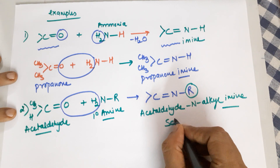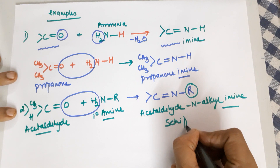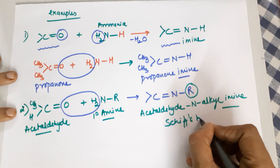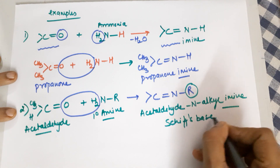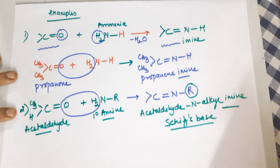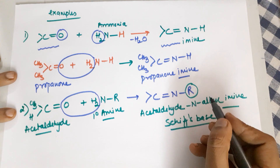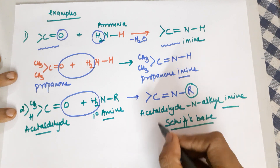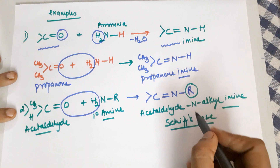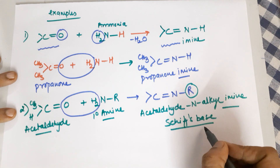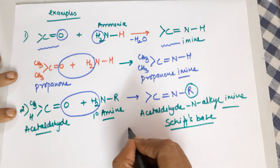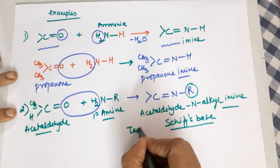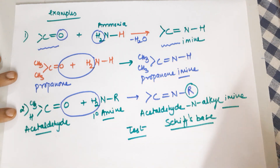This product is also called a Schiff's base, which is used as a test for aldehydes and ketones. It changes its colour — you get a pink coloration with Schiff's base reagent. So Schiff's base is used as a test for aldehydes and ketones.